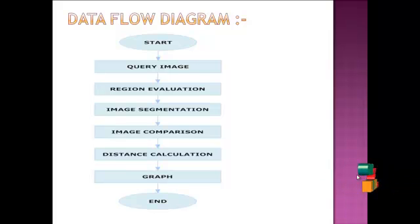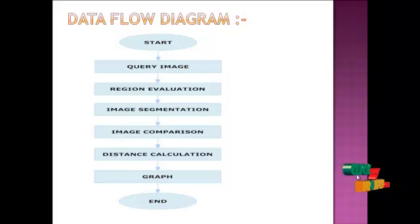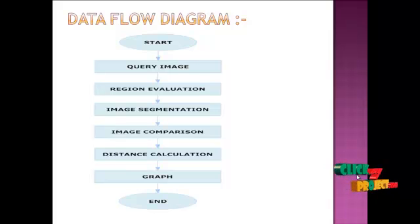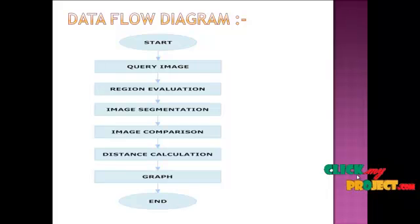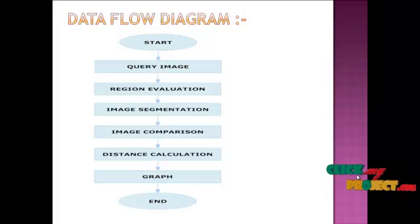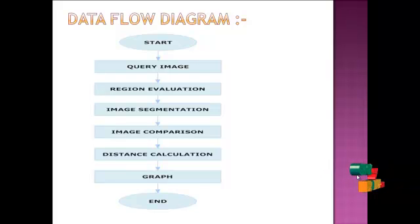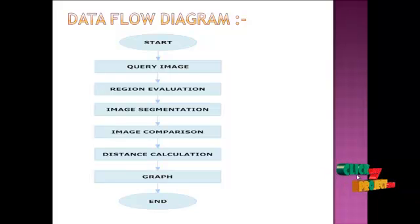After performing the distance calculation, the 1000 images will be arranged in order in which the topmost image will be the most accurate and the remaining images will be the most similar to the input query image. After acquiring the most similar image from the database, we will display results via a graphing method. That graph shows the time acquired by the image based on the similarity for the input query image.